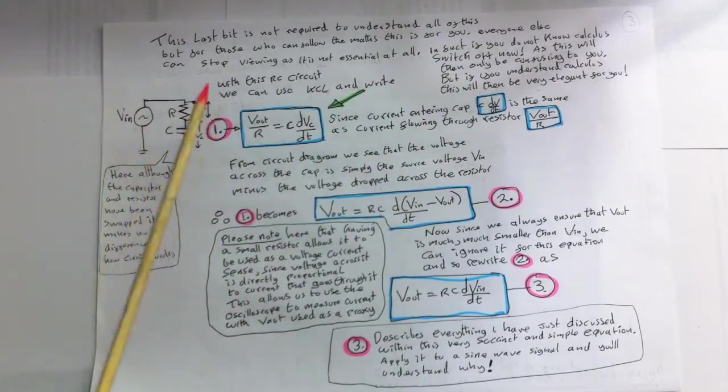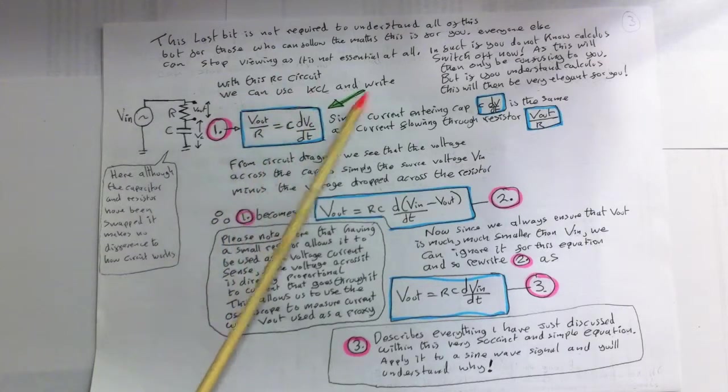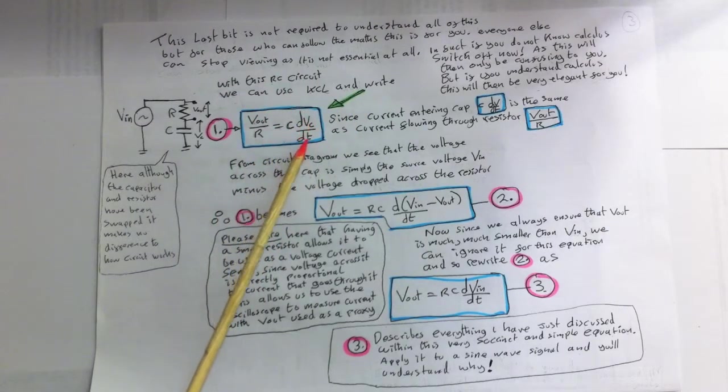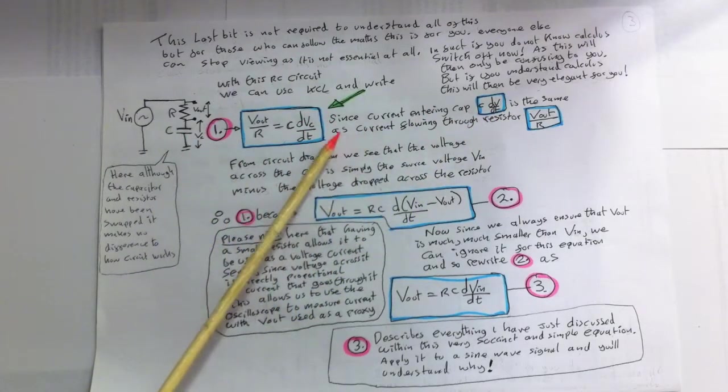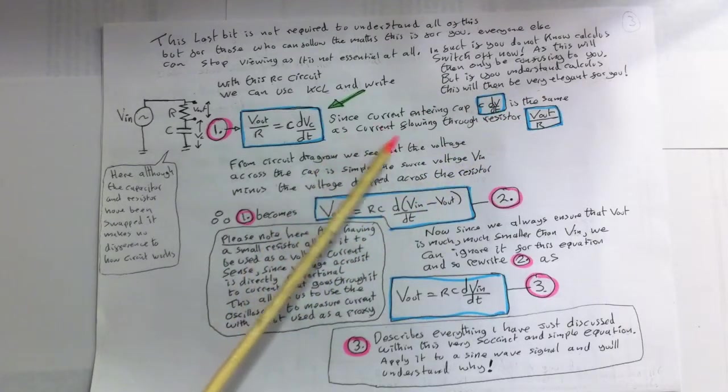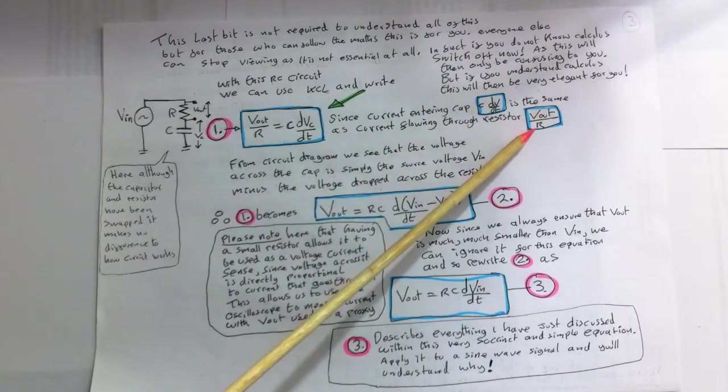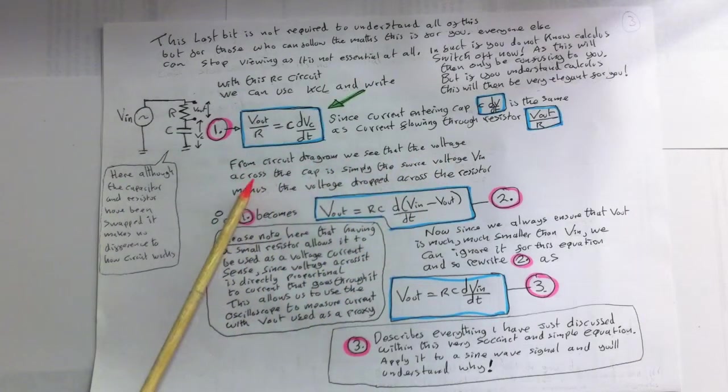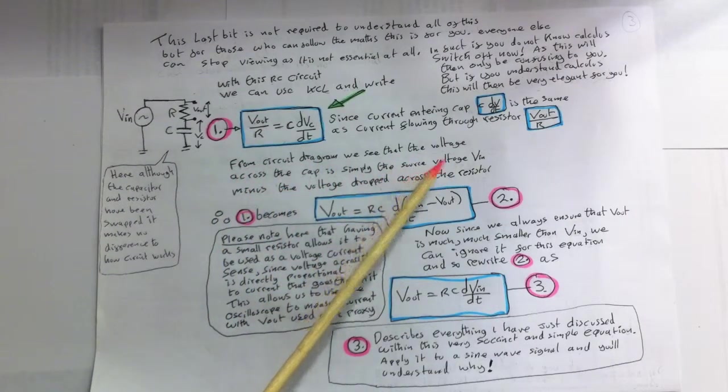So looking at this circuit, with this RC circuit, we can use KCL and write Vout over R equals C dVc by dt. Since current entering the capacitor, C dV by dt, is the same as the current flowing through the resistor, Vout over R. From the circuit diagram, we see that the voltage across the cap is simply the source voltage, Vin, minus the voltage dropped across the resistor.